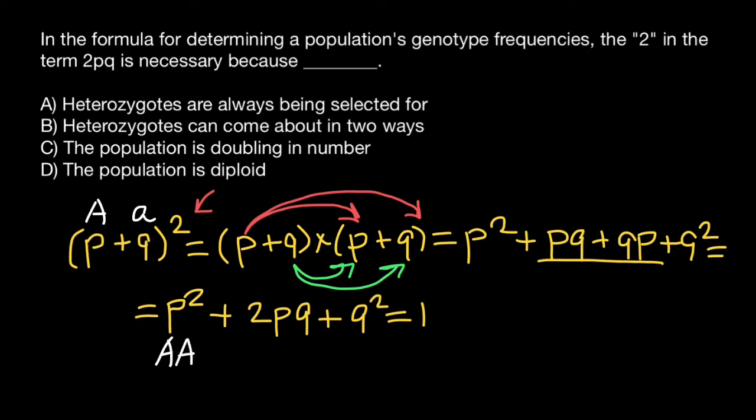Then p squared would be homozygous dominant genotype frequency. And 2pq would be frequency of the heterozygous genotype. And q squared would be frequency of the homozygous recessive genotype in this population. And if we combine them, we should get one or 100%.